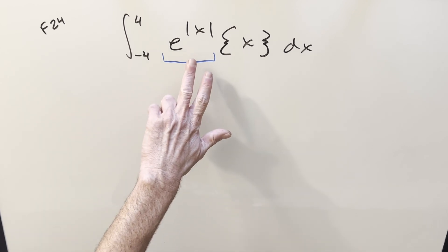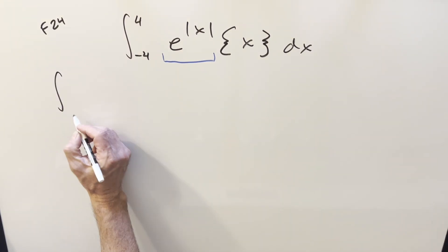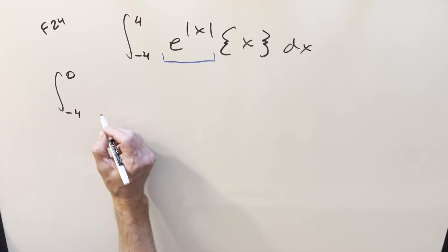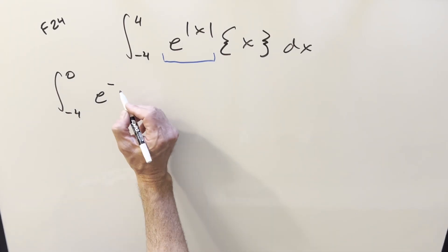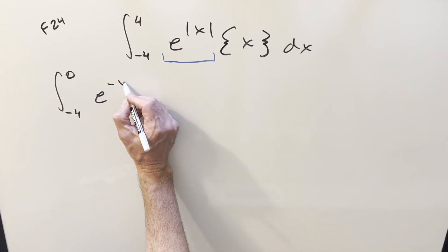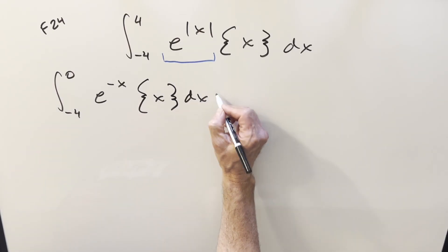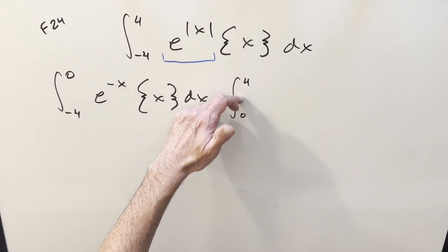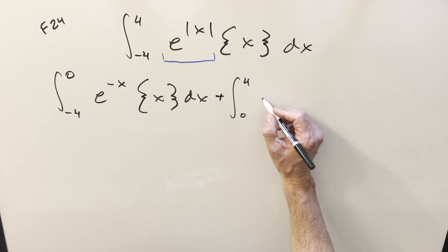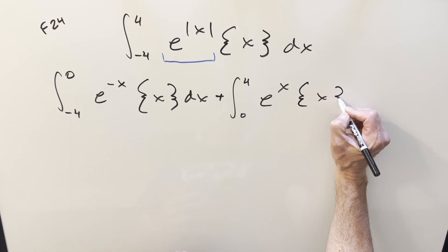One thing we can do is, in order to deal with absolute value, we can break this up into two integrals. So I can split it up, getting all the negative values. Go from minus 4 to 0 of this same thing. Now all the x values are negative, so I can write it as e to the minus x, fractional part of x. Then for our other integral, we go from 0 to 4. Now all the x values are positive, so we can drop the absolute value and do e to the x, fractional part of x.